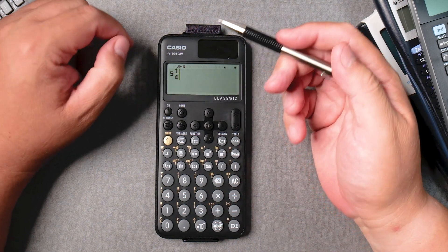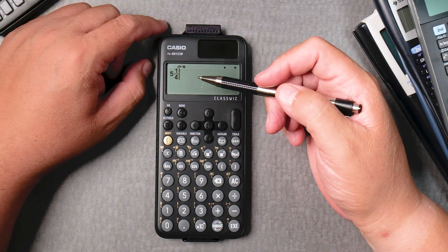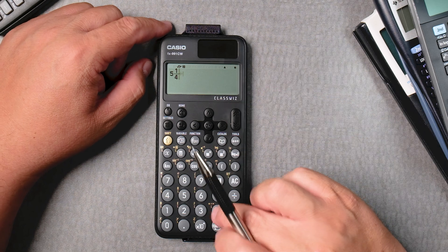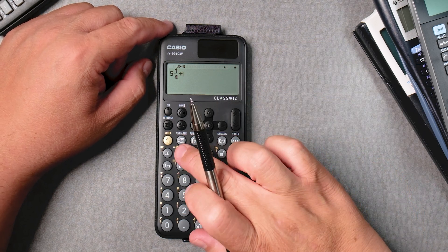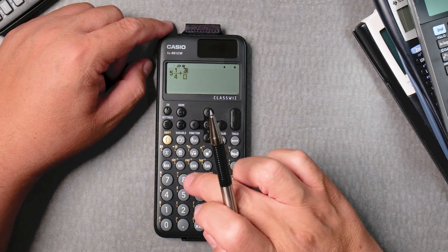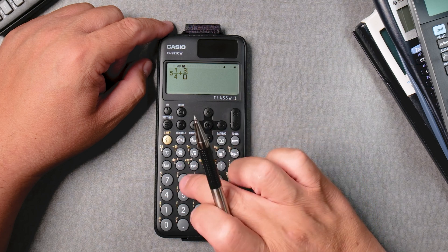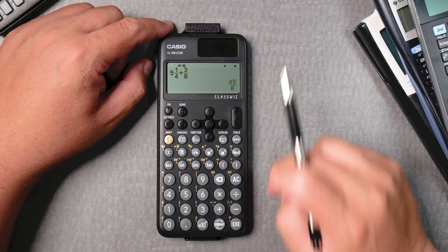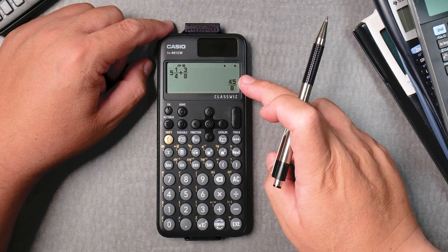If that was too fast, just rewind the video and you'll get the steps. Then plus, fraction button, three over eight, then bring it down, eight, and then exe. Forty-five over eight.